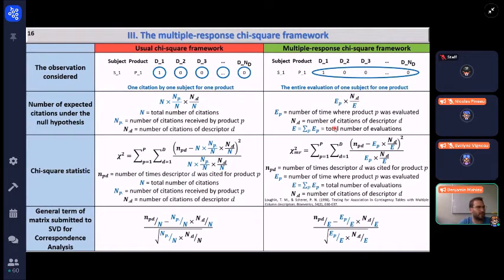The core difference with the usual chi-square framework is the observation that is considered between the two frameworks. Here in the usual chi-square framework, the observation that is considered is one citation provided by one subject for one product. So here you can see an evaluation, and here is a single observation. And here in the multiple response chi-square framework, the entire evaluation of one subject for one product is considered as an observation.